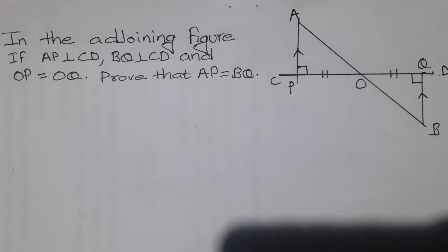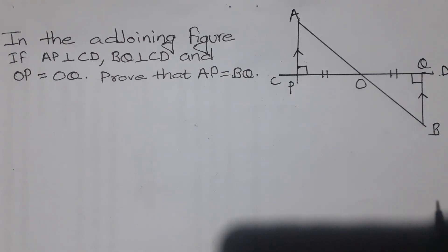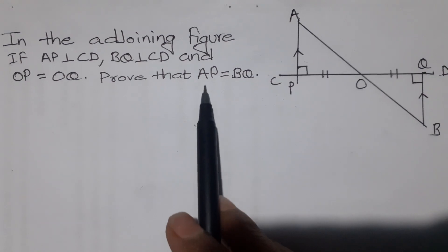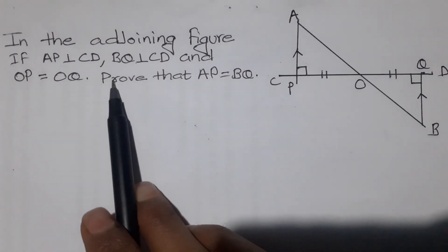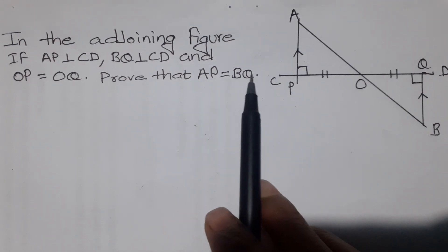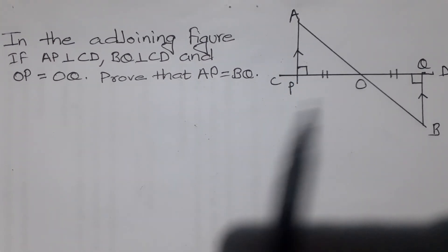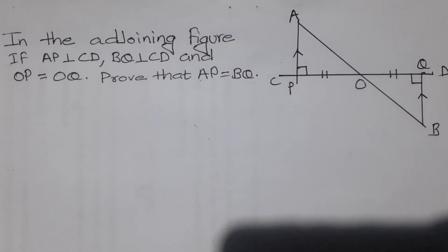Now, if you can see this figure, it is connected to a triangle — a separate triangle. How can we prove it? If you have a congruency, you can prove it. There are four types of congruency: ASA, AAS, RHS, and SSS.